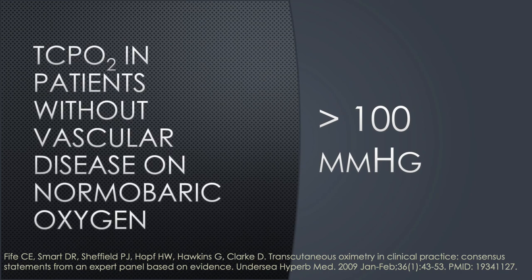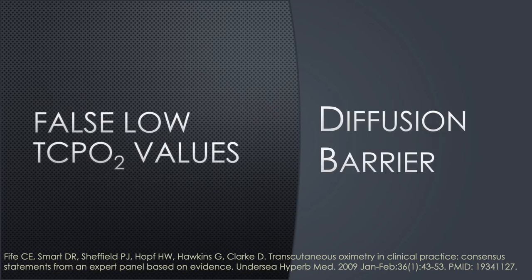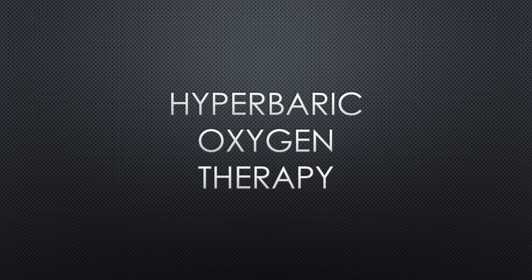In patients without vascular disease, TcPO2 values on the extremities increase to more than 100 mmHg when breathing 100 percent oxygen under normobaric pressures. After revascularization, an increase in TcPO2 to more than 40 mmHg during normobaric air breathing is usually associated with subsequent wound healing. It is important to note that low TcPO2 values obtained while breathing normobaric air can be caused by a diffusion barrier like edema. Edema is the enemy.